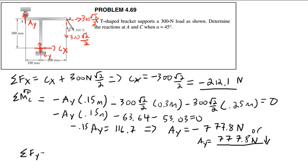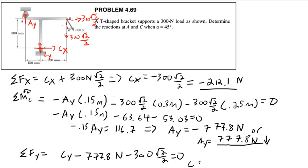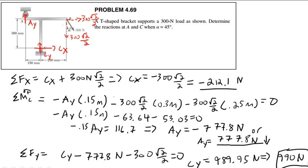Then sum of forces in Y: CY plus AY plus the Y component of the load equals 0. CY minus 777.8 minus 300 root 2 over 2 equals 0, giving CY equals 777.8 plus 212.1, which equals approximately 990 newtons. Now we have the reactions at C in X and Y, and the Y reaction at A. That is the final answer.